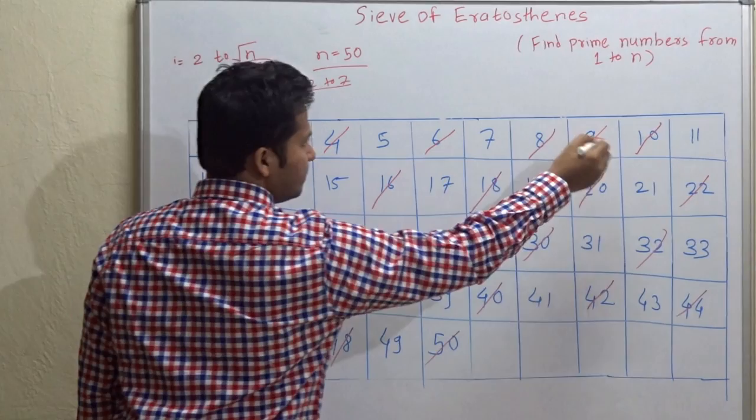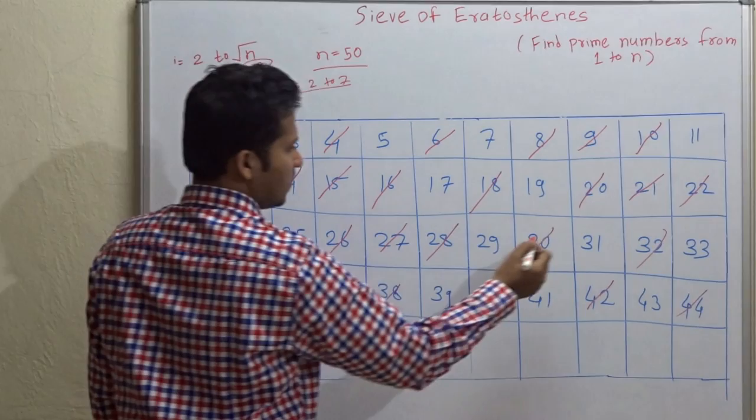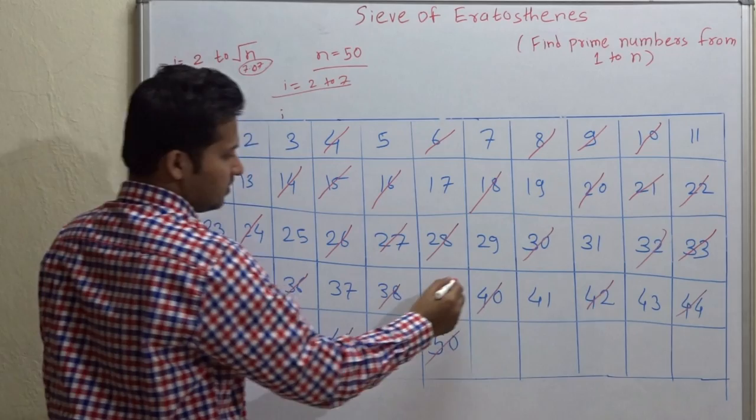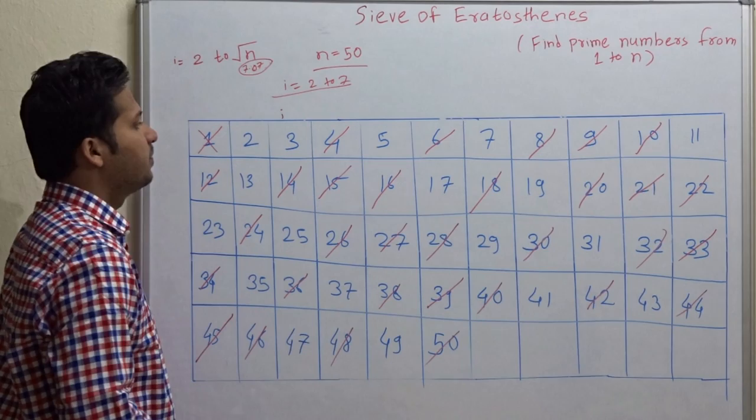Multiple of 3 is 6 is already cancelled, 9, 12 is already cancelled, 15, 18, 21, 24, 27, then 30, 33, 36, 39, 42, 45, 48, and 51 is greater than 50.